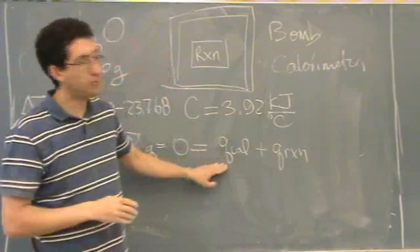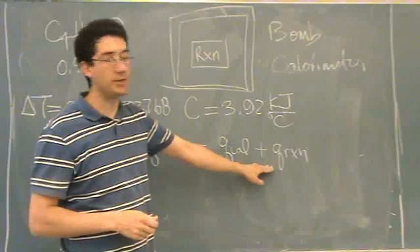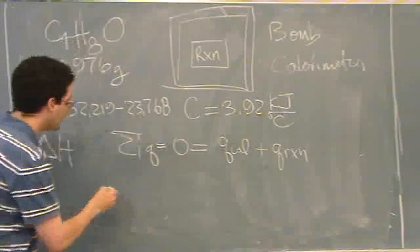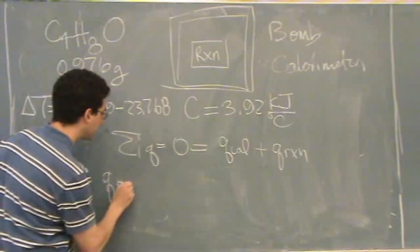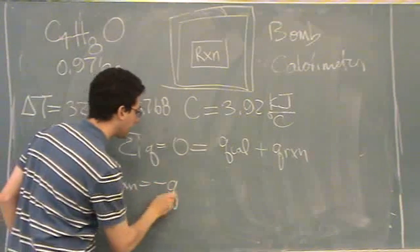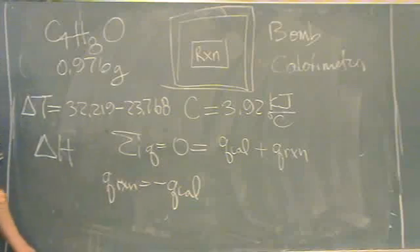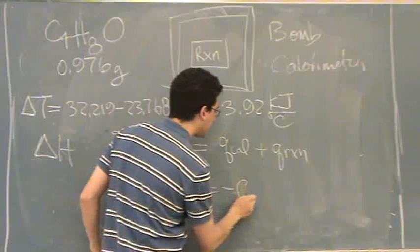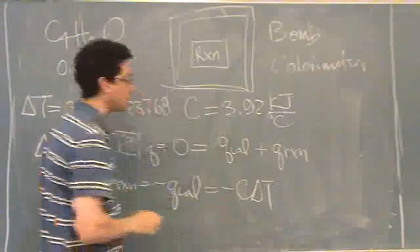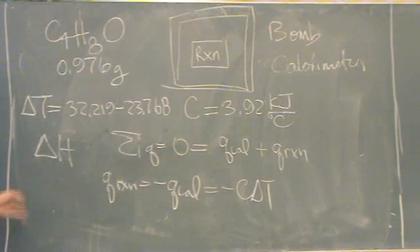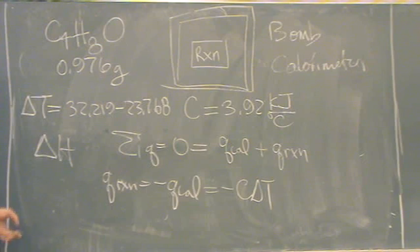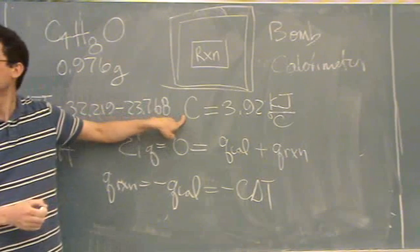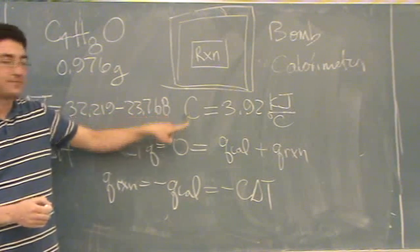The other kind of q is there's a temperature change. So in this case, they want to know the q of reaction. That's the delta H. So q of reaction equals negative q cal. q cal, that's a temperature change. So that's negative C delta T. Notice I wrote C delta T instead of MCP delta T, because they didn't give me CP. They just gave me C.